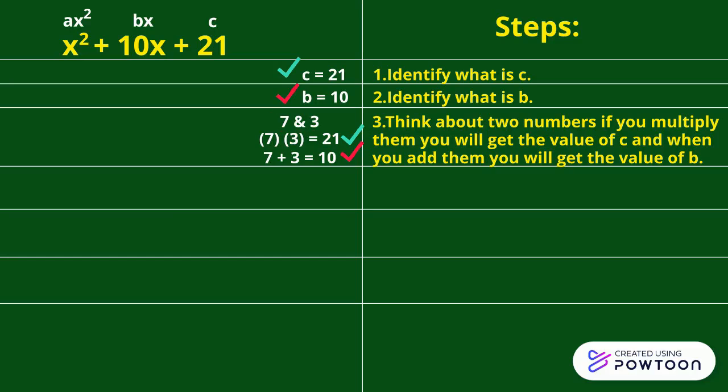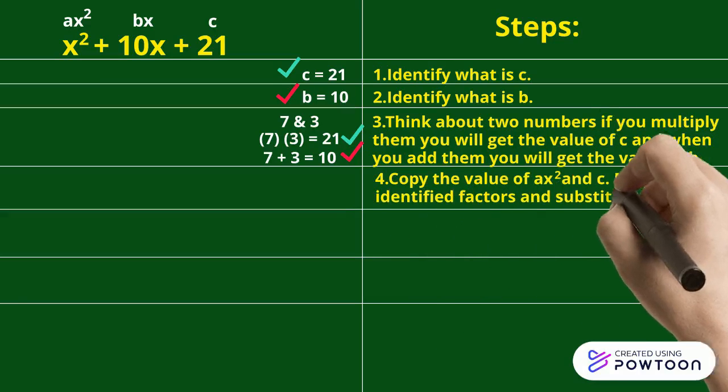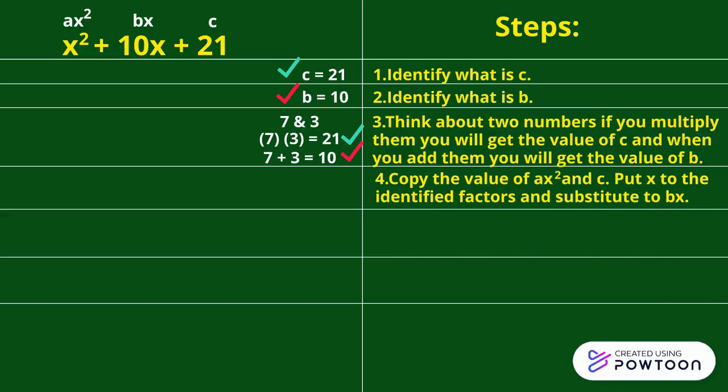Fourth step is copy the value of AX squared and C. Put X to the identified numbers or factors and substitute to BX. So bring down X squared and 21, add X to 7 and 3. So it is 7X plus 3X.